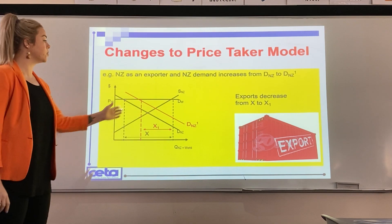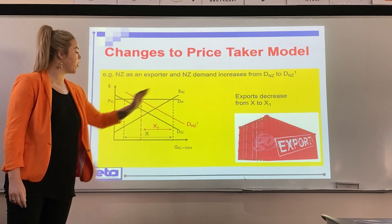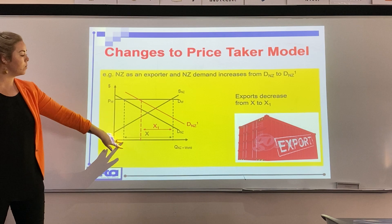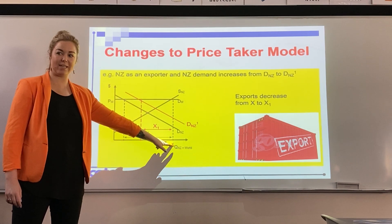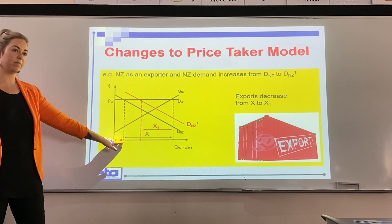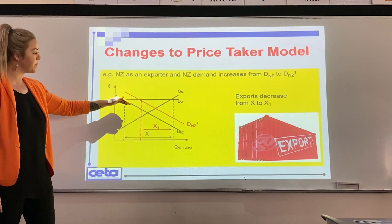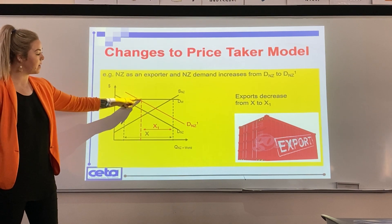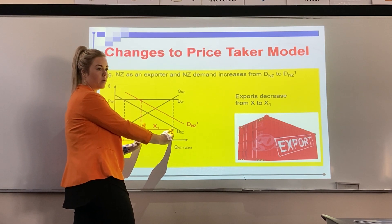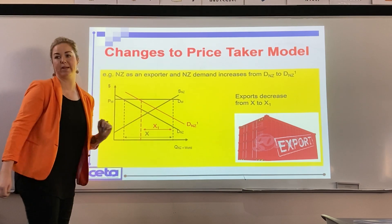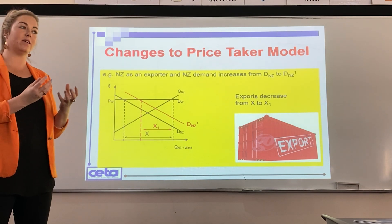This graph shows the scenario where we are an exporter and domestic demand shifts. Initially we have our demand curve, supply curve, and world price. Quantity demanded NZ is where the world price hits the demand curve; quantity supplied NZ is where it hits the supply curve — supply is greater than demand, so we're an exporter. When demand increases and shifts out to the right to D1, our original exporting quantity decreases. Because demand in the domestic market has increased, we're selling more locally, so what we have left to export overseas is less.